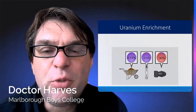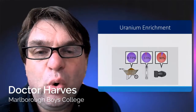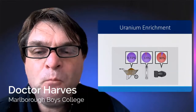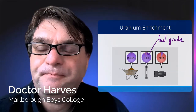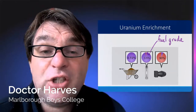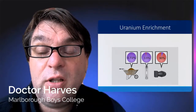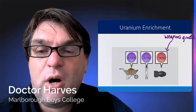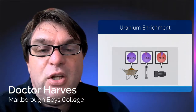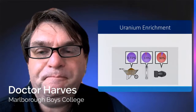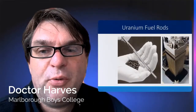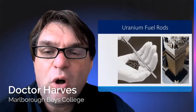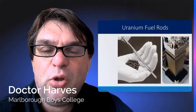In terms of Uranium enrichment levels: raw ore from the ground is about 0.7% Uranium-235; the centrifuge gets it to fuel grade, around 3.5%, which is what we use in nuclear power stations. Nuclear weapons require highly enriched Uranium of about 90% — hence why centrifuges are used by the Iranians. The enriched Uranium-235 is then made into fuel rods, which are placed into the reactor.